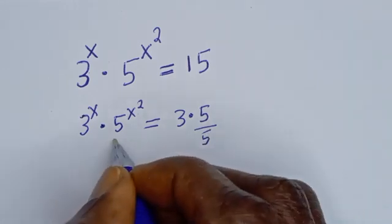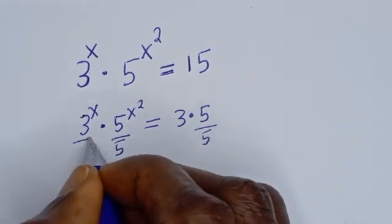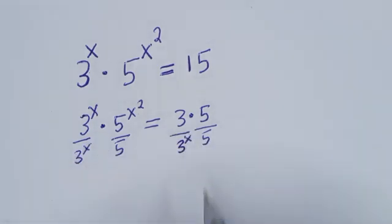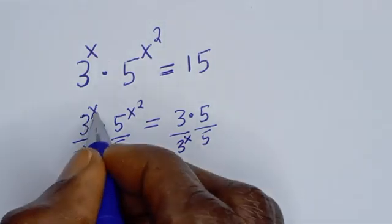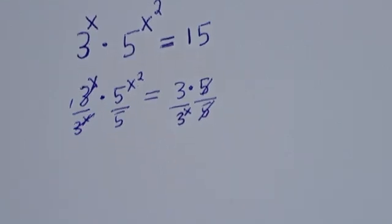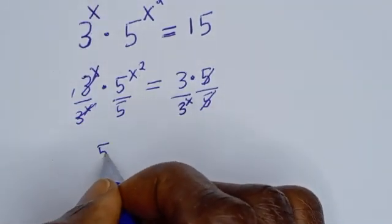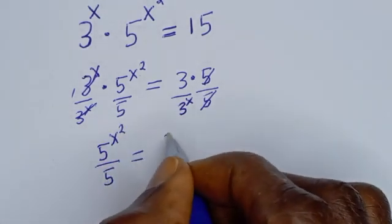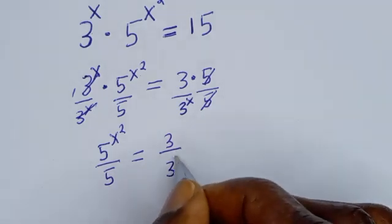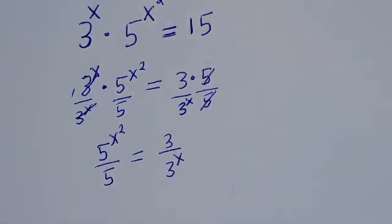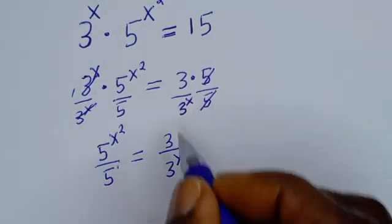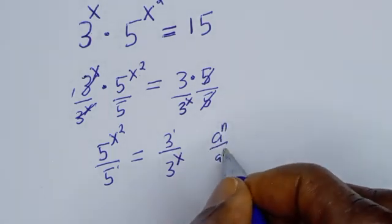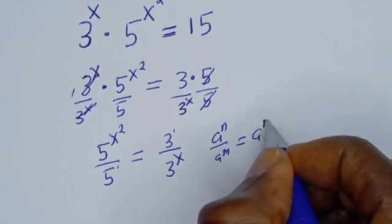Let's divide both sides — dividing by 5 and by 3 to the power of s. This cancels, leaving 5 to the power of s squared divided by 5 equal to 3 divided by 3 to the power of s. Using the rule that a^n / a^m = a^(n−m), we simplify each side.